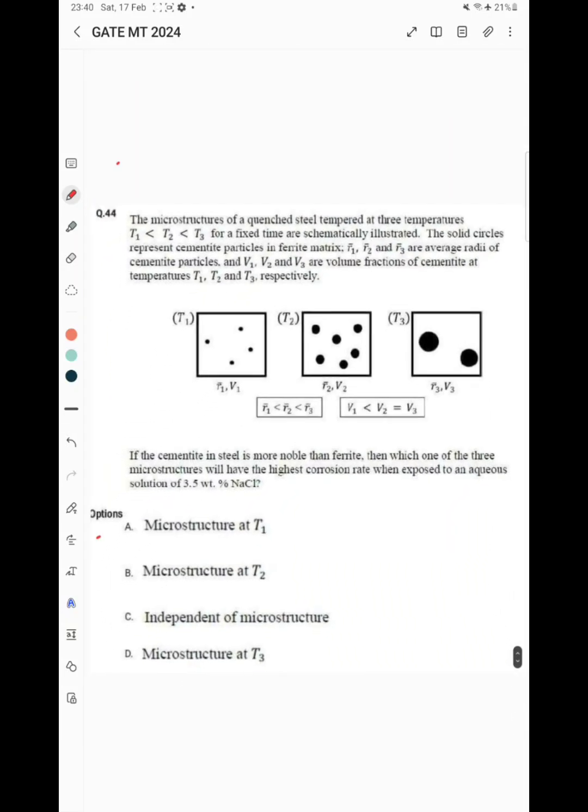The next question is again on microstructure. Three microstructures are given for quenched steel tempered at three different temperatures T1, T2, T3 for fixed time. The solid circles represent cementite particles in ferrite matrix. This white region is ferrite, black particles are cementite with different radius r1, r2, r3, and the volume fraction is different: f1 is less than f2, and f2 and f3 are equal.